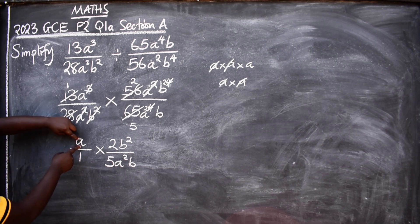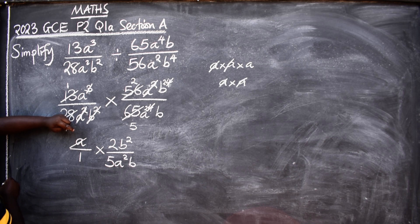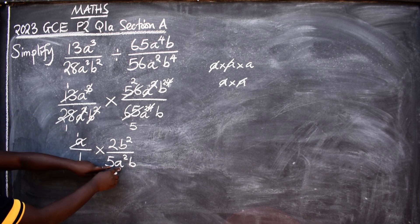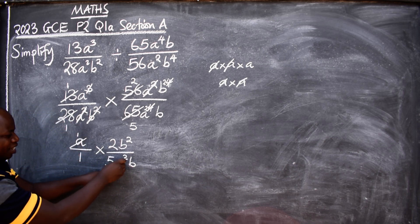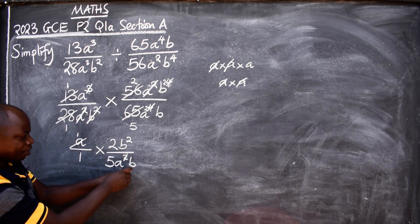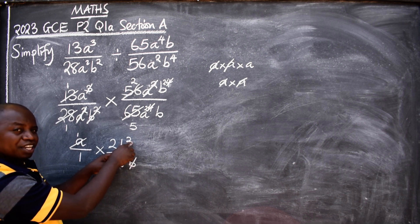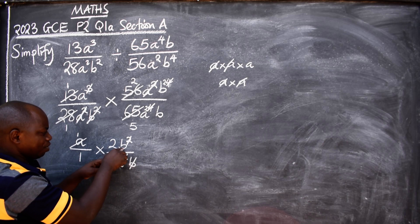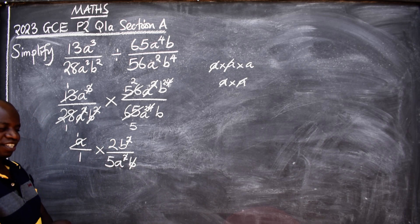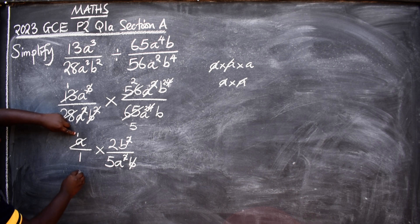There is one a here and two a's there, so I'll cancel one a and remain with one a. Similarly for b: there is one b here and two there, so I cancel one b and remain with one b. What next? I can now write what has remained: 1 over 1 times 2b over 5a.